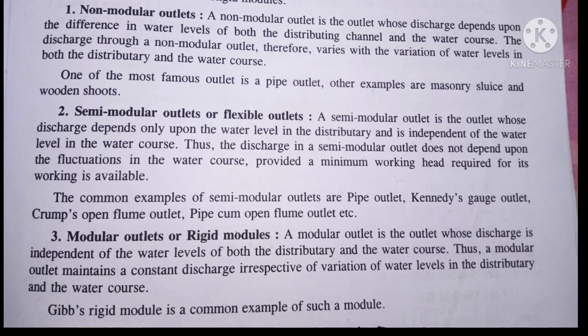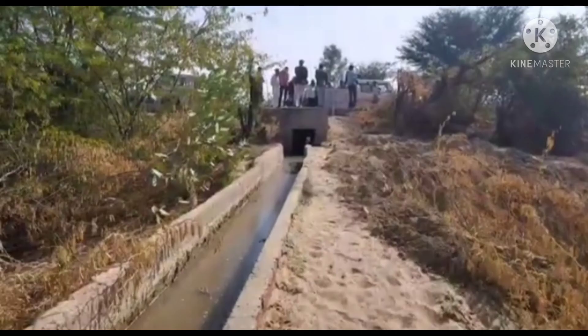Uske baad second outlet hai semi-modular outlet, aur flexible modules. In mein kya hoga ki jo water course se outlet mein jo paani aa raha hai, woh freely aayega. Matlab water course ka level upar niche hum kuch bhi kar dein, outlet par uska koi fark nahi padega. Jitna paani aana hai, utna paani hi aayega — matlab constantly ya freely water outlet par pahunchta rahega field ke liye, yafhi irrigation supply ke liye. Ye screen par jo aapko picture show ho rahi hai, ye minor distributory ki hai, mein paani jo hai woh canal se aa raha hai, aur jahakar hum outlet par isko process kar rahe hain.